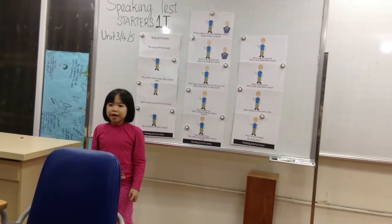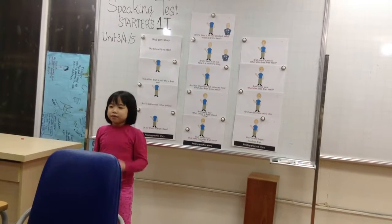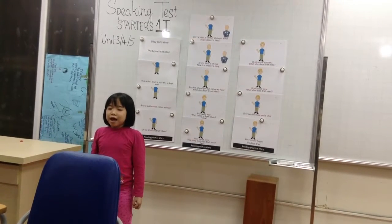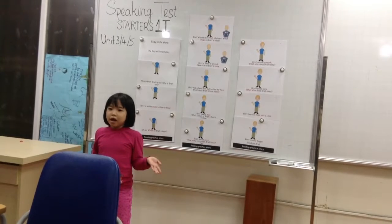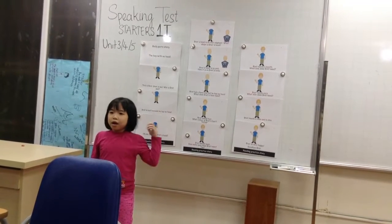Brain's head is an oval. Now it is on Brain's body. Brain has a head now, but he has no face. What does Brain's head need?